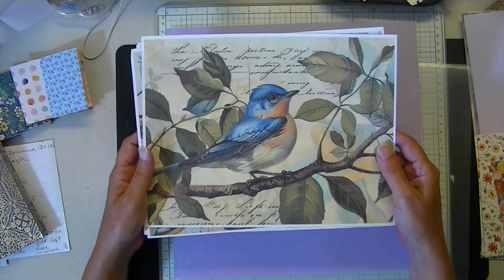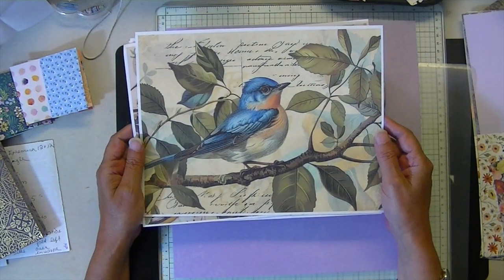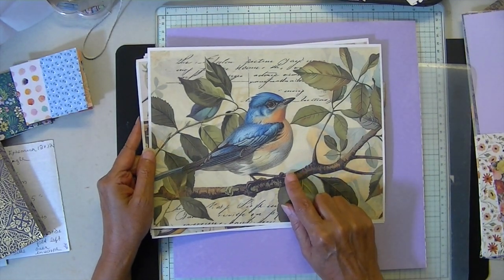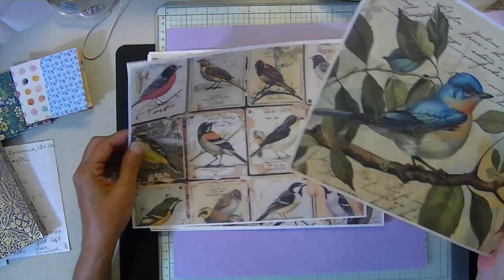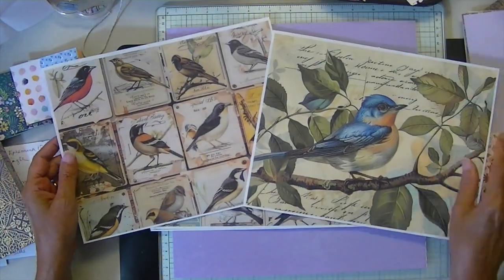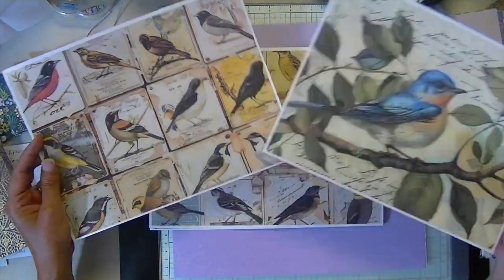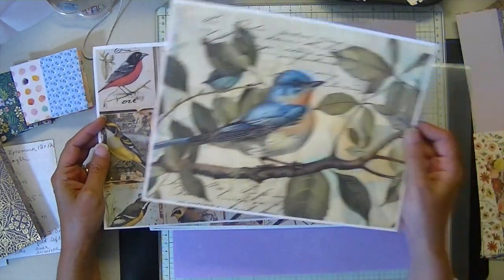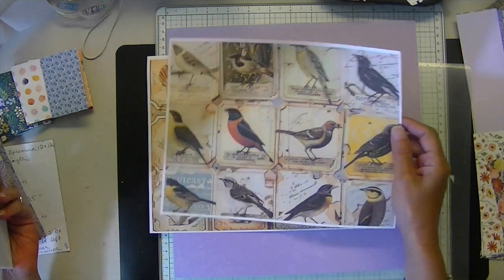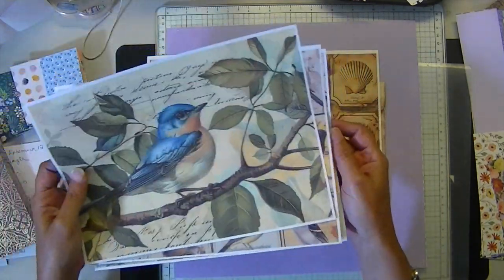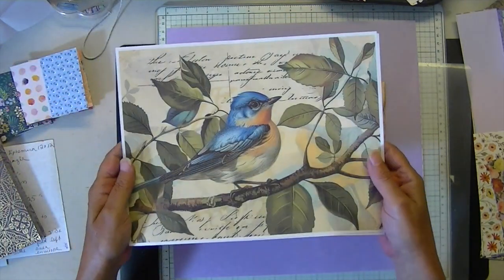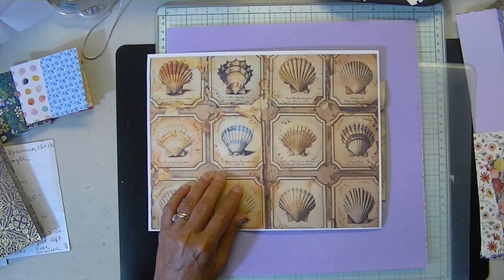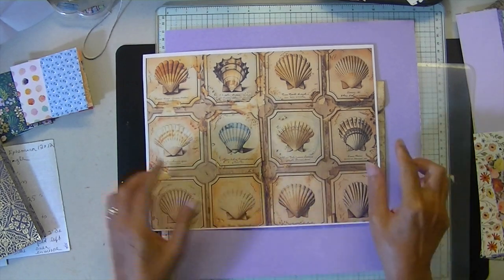And I can't wait until you see these. This is naturalist birds. And these larger images are on Etsy. But these and these are on Shopify. And it's like, I think it's 32 pages. So those are going to be a lot of fun. And my little blue bird. Love blue birds.